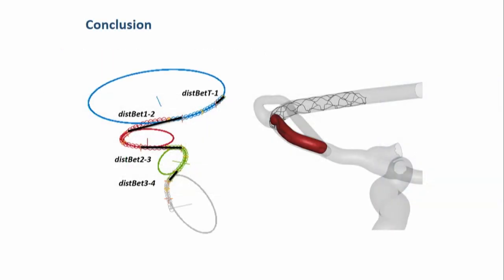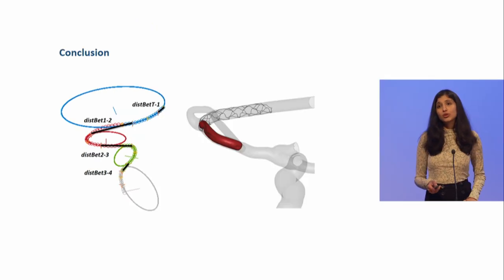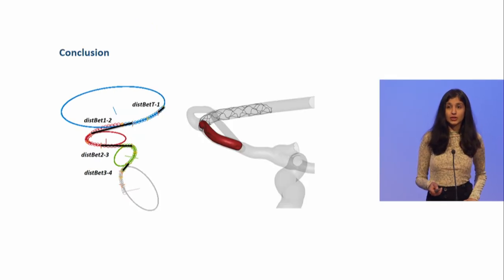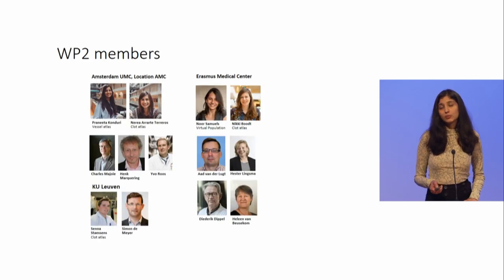To conclude, we found that the local geometry characteristics are associated with technical outcome of treatment, and we could not find any association between the stent characteristics and outcome. But we believe that further analysis on a larger database is required to actually validate these findings. I would like to thank all the work package 2 members for their contributions to this study, and also look forward to collaborating with them again. Thank you.